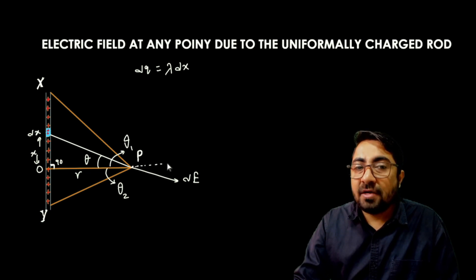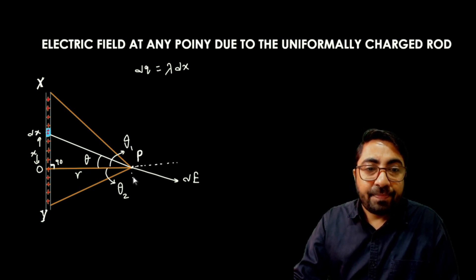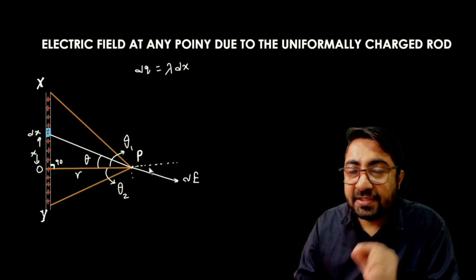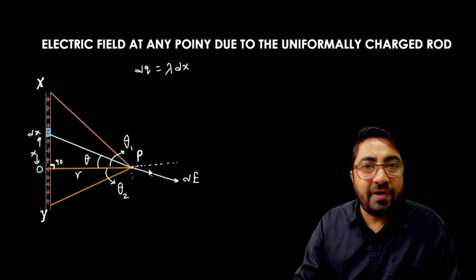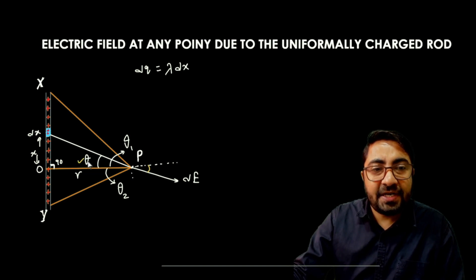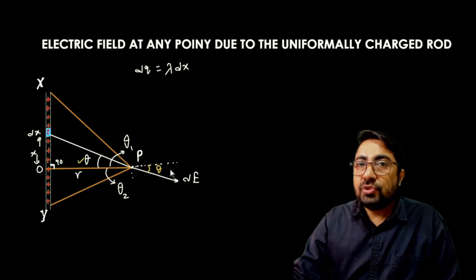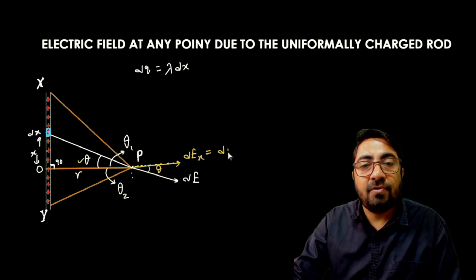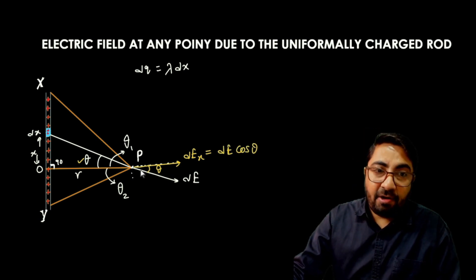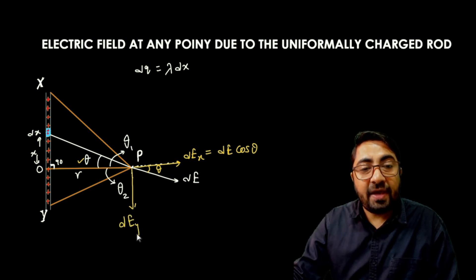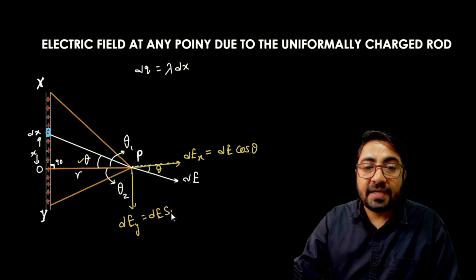In order to split the components of dE, there are two components: the component of electric field along the x-axis and the component along the y-axis. The vertically opposite angles are equal, so if this angle is theta then this angle is also theta. The electric field along the x-axis equals dE cos theta.